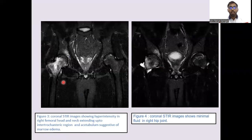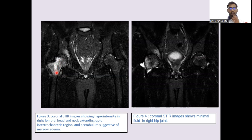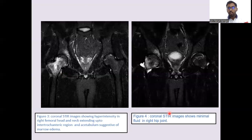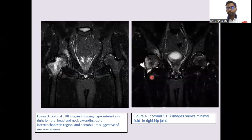A coronal STIR image was taken, showing hyperintensities in the right femoral head and neck extending into the intertrochanteric region and acetabulum, which is suggestive of marrow edema. The fourth figure is a coronal STIR section image, which shows minimal fluid collection in the right hip joint.